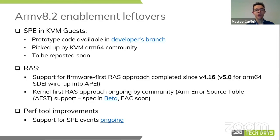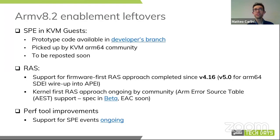RAS: we completed support for the architectural firmware-first RAS approach since 4.16 — roughly a year ago — with a few additions added in 5.0, like wiring up SDI into the APEI table. What is left to be done is the so-called kernel-first RAS approach, which is ongoing by the community. ARM is going to produce a specification which defines the ARM error source table. The specification is in beta at the moment, available on developer, and is going to reach EAC pretty soon.